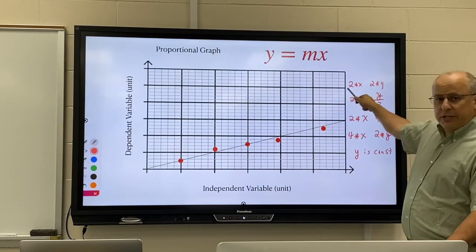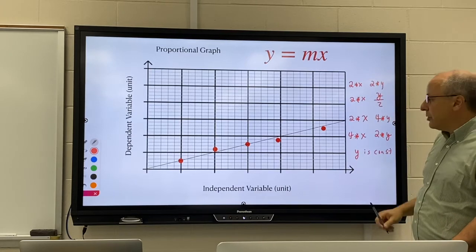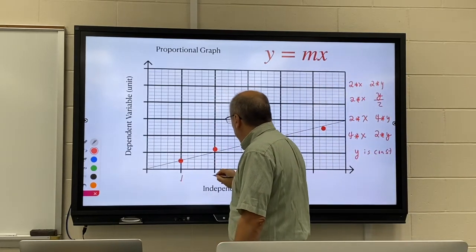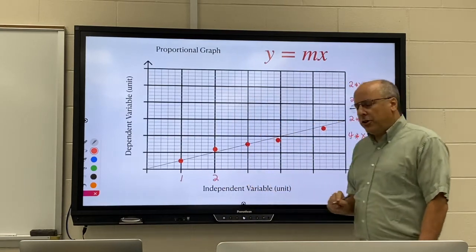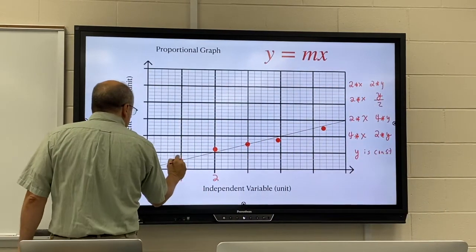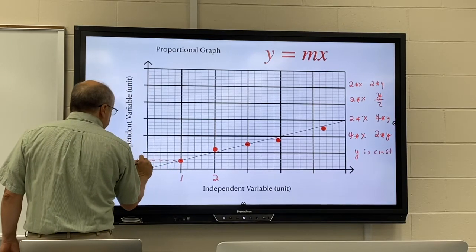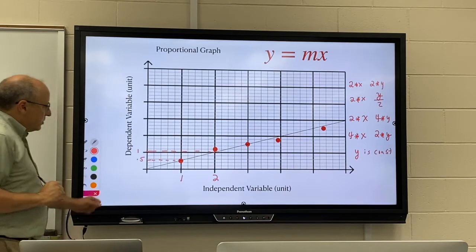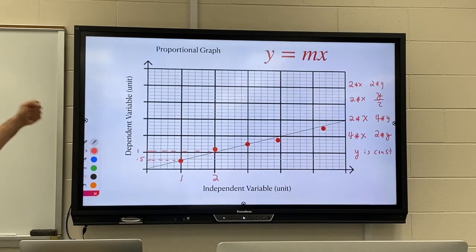So this is a proportional graph, and we saw two times X gives me two times Y. So if I pick an X of one and I double that to two, I should also double my Y value from about half to about one. So if I double my X, I double my Y.